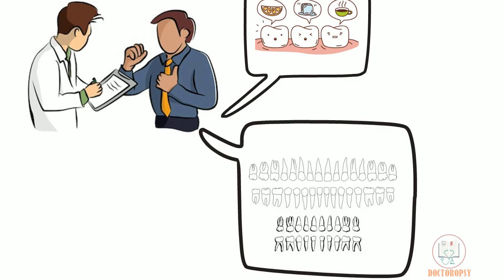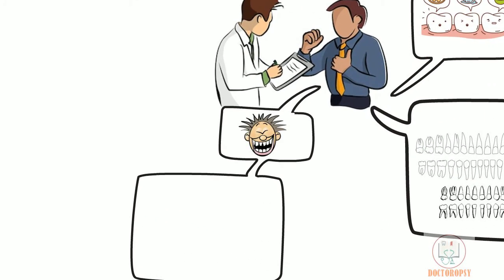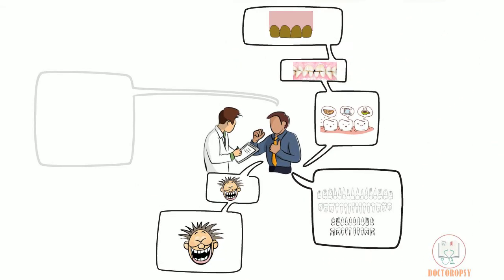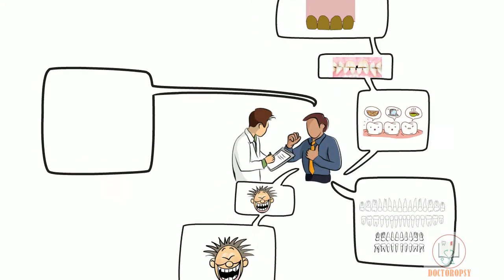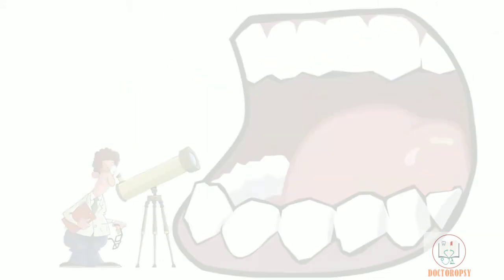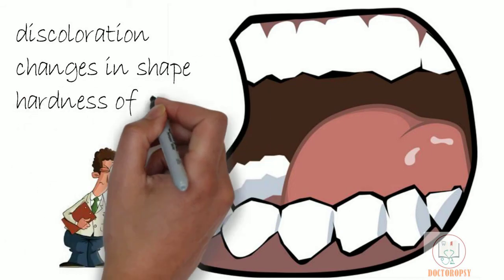It is important to know that all teeth are affected in deciduous and permanent dentition. The patient may give a history of abnormal shaped teeth from the beginning, as in hypoplastic type, or teeth that were normal initially and underwent rapid attrition to the current state, as in hypocalcified and hypomaturation type. In family history, the patient mentions the presence of similar features in family members.